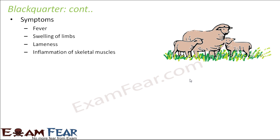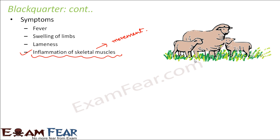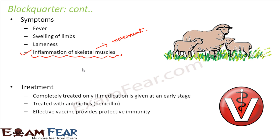Symptoms of black quarter include fever, swelling of limbs, lameness, and inflammation of skeletal muscles. Since skeletal muscles help in movement, when they are impacted the animal cannot walk properly and there is swelling on the limbs. The disease can be completely treated only if medication is given at an early stage, though starting early is very difficult. It can be treated with the antibiotic penicillin. An effective vaccine is available that provides protective immunity, so prevention is possible.